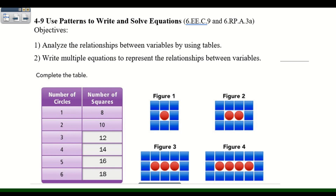This is the relationship between X and Y. The number of circles is the independent variable — the quantity that can stand alone. Y, in this case, is going to depend on the number of circles, so Y is the dependent variable. If you add another circle, you have to add two more squares; if you add two more circles, you add four more squares. So the number of squares is the dependent variable, and circles is the independent variable.